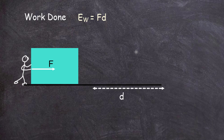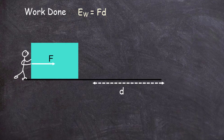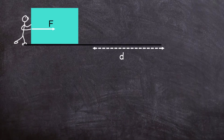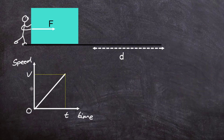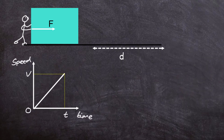A moving object will have a speed V. We can do that by looking at the graph of what happens when the block begins to move. We draw a speed-time graph. Initially the block is at zero, and the force acting on the block causes it to accelerate from zero metres per second to V metres per second, and it does that in a time T.